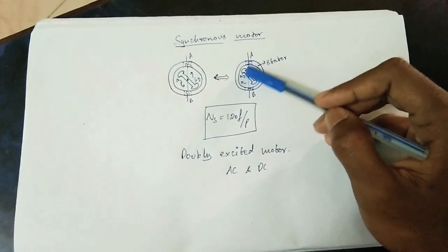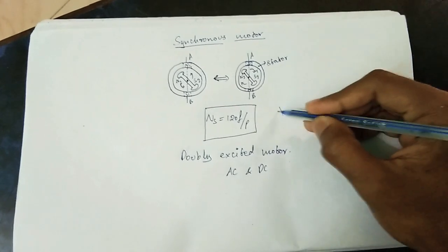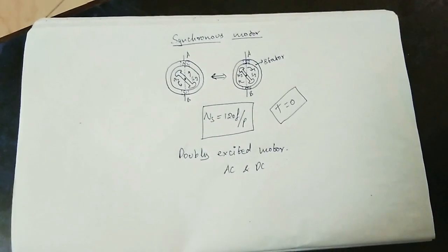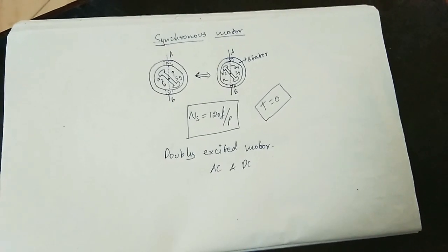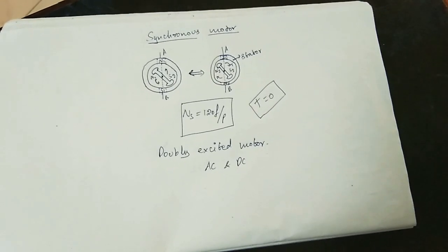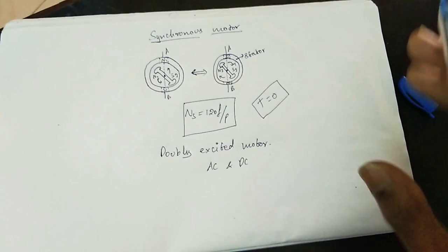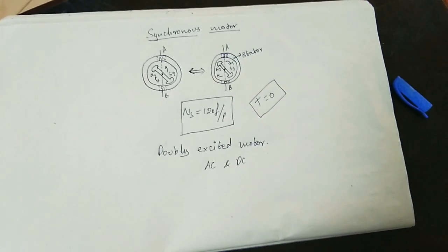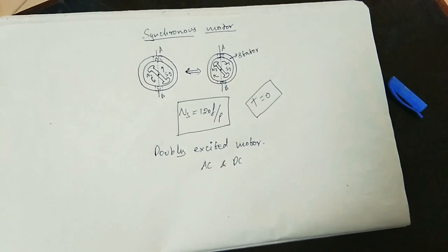This is where the concept of synchronicity and magnetic locking comes in. Magnetic locking is the condition where the rotor locks with the rotating magnetic field and rotates at the same speed. It is not the same as the induction motor principle.